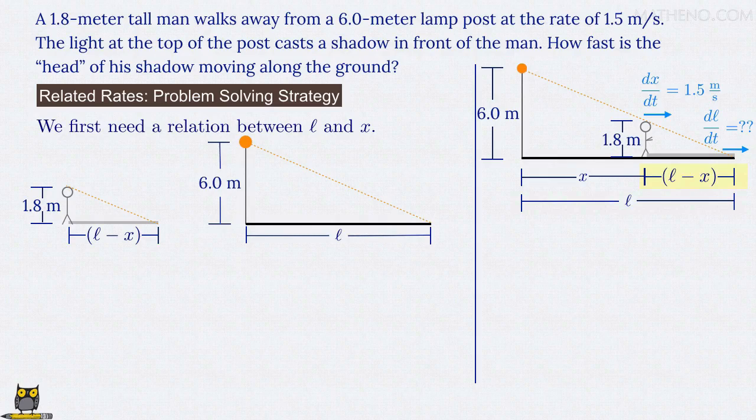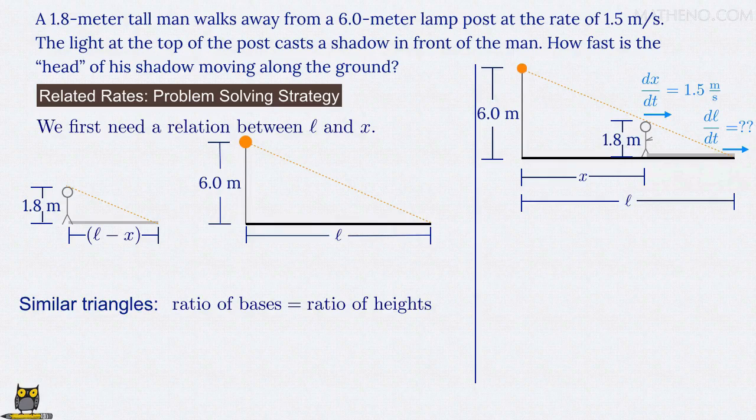With those quantities in place, we can remember that when you have similar triangles, the ratio of their base lengths equals the ratio of their heights. Here, the ratio of the base lengths is (l - x) divided by l, which equals the ratio of their heights, 1.8 meters divided by 6.0 meters. Numerically, that equals 0.30.